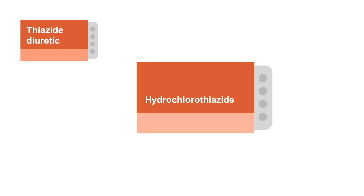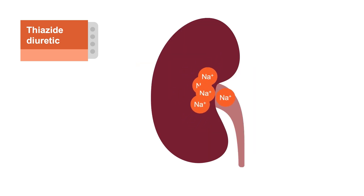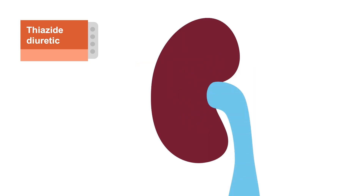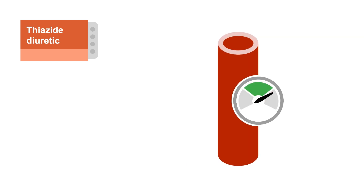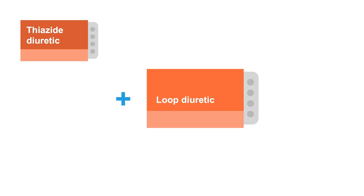Thiazide diuretics, such as hydrochlorothiazide, act similarly to loop diuretics but on a different part of the kidney tubules. Thiazide diuretics also cause vasodilation, which lowers blood pressure. They're not as effective in patients with heart failure, so they should be used in conjunction with a loop diuretic.